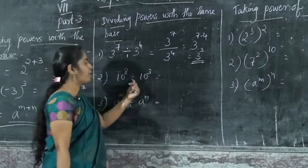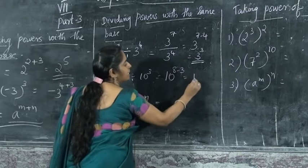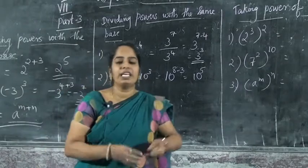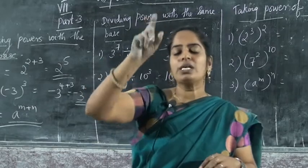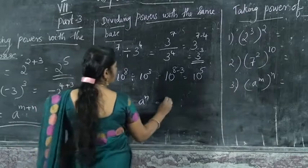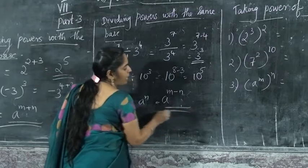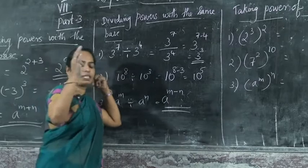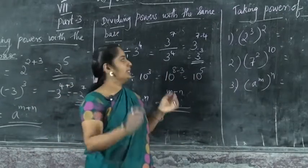Next is 10 raise to 8 divided by 10 raise to 3. That is 10 raise to 8 minus 3, that is 10 raise to 5. Because it is division with the same base, and the powers are different, so we subtract the powers. And in general: a raise to m divided by a raise to n means a raise to m minus n. When multiplication, we add; when division, we subtract the powers.